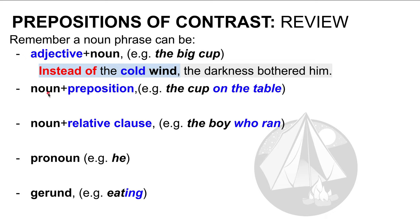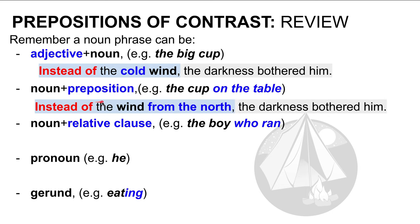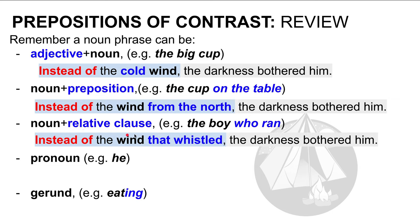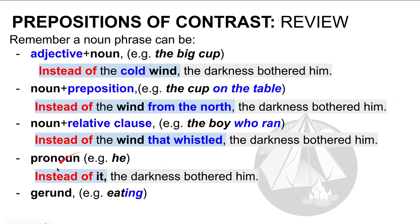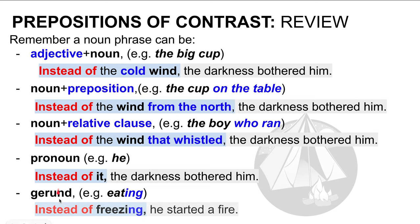A noun phrase can also be a noun plus a preposition. So, instead of the wind from the north — here the preposition is from the north. A noun phrase can also be a noun plus a relative clause, such as instead of the wind that whistled — the wind is the noun and the relative clause is that whistled. A noun phrase can also be a pronoun, for example instead of it, the darkness bothered him. And lastly, a noun phrase can be a gerund, such as instead of freezing — here my gerund is freezing.